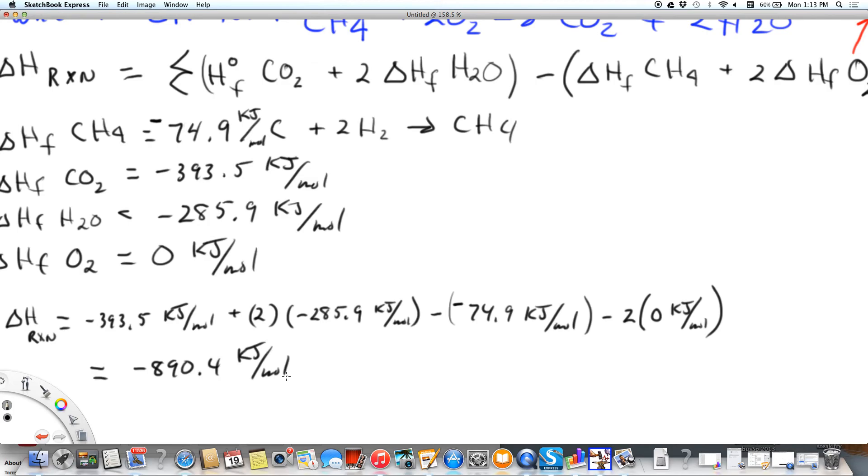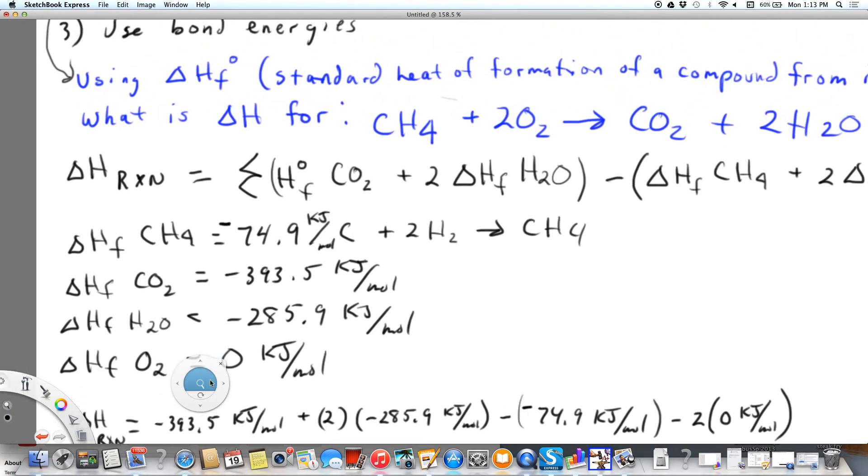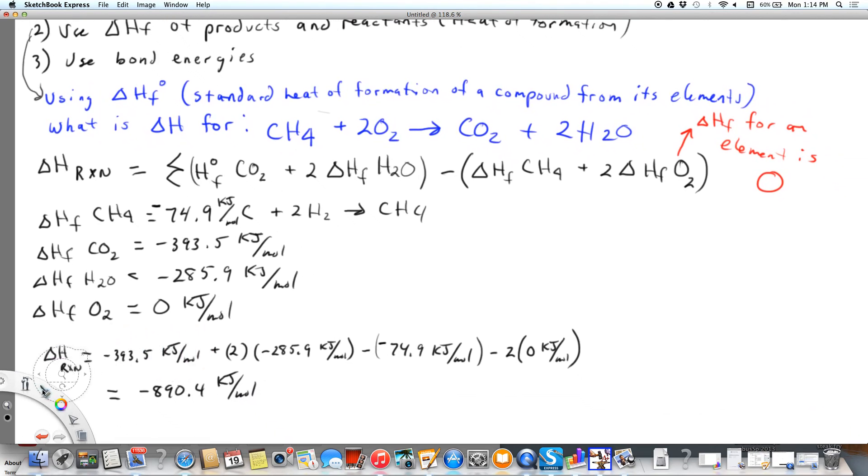So again, what we've done here is we found the heat of this particular reaction, and we did it using the heats of formation of the products and the reactants. So we added up the heats of formation of the products and we subtracted from them the heats of formation of the reactants, remembering that the heat of formation of an element is zero. We added those up algebraically. If we had two moles in our equation, then we made sure that we multiplied times two. And we algebraically added it together, and it's negative 890.4 kilojoules per mole to combust methane.